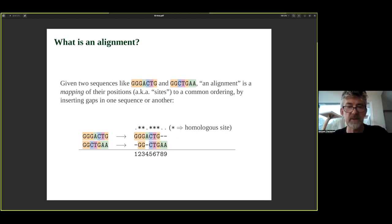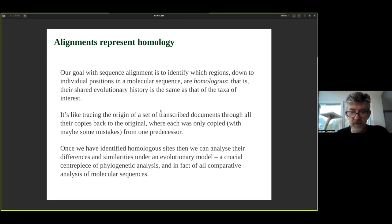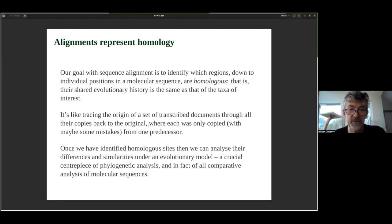That would be an alignment for those two sequences. You can think of identifying homologous sites or loci in molecular sequences a bit like tracing the origin of a set of transcribed documents that have been meticulously copied from document to document, all the way back to the original. The first word in each copy would be homologous, even if it's been copied with some error.